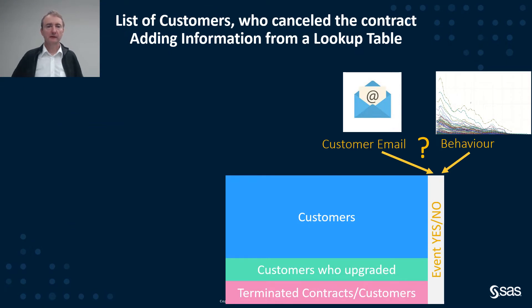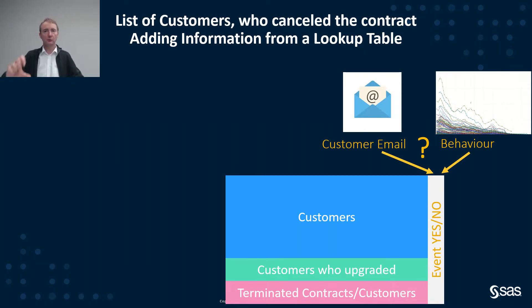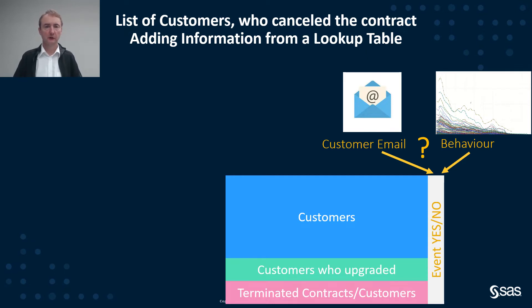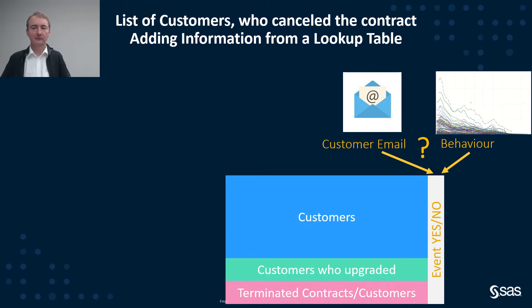From a business perspective, this could be, for example, that you have your large customer data table with all your hundreds of thousands or millions of customers, and you have a smaller lookup table with additional information. Maybe this is a certain product usage flag, or a lookup table which says which customers have cancelled during a certain period last month, or who have had another event. So we would like to get data from a lookup table to our larger customer table.